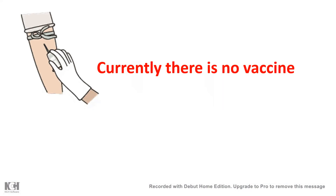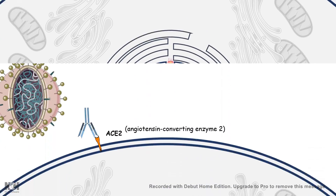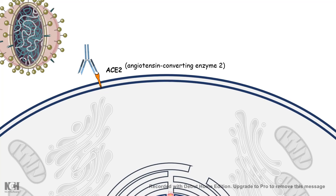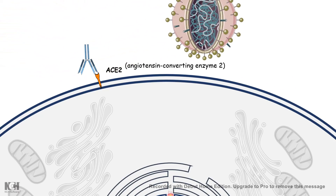Currently there is no vaccine, but scientists have noticed that the virus enters the cell via the S2 receptor, so they tried to block it as a temporary treatment by creating antibodies against the S2 receptor. This is not yet marketed, but it is a promising treatment — if the S2 receptor is blocked, the virus cannot get in and the infection cannot occur.